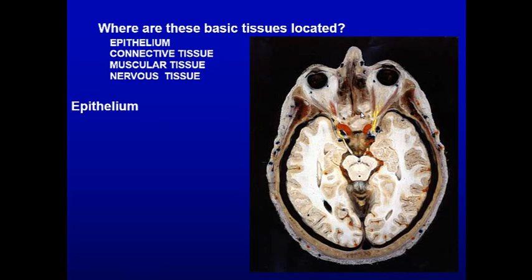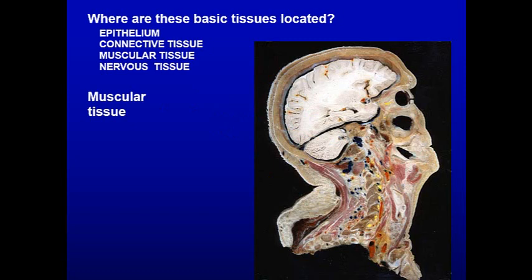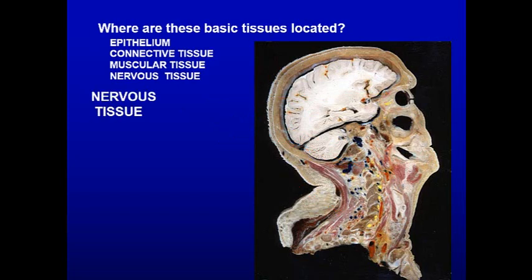Looking at the four basic types of tissue in this skull: epithelium is in the eye, lines your nose, is in your skin, and lines cavities — that's what epithelium does. It forms junctions between adjacent cells, allowing cells to hold hands and form a cavity. Connective tissue is in the skull, supports the nose, forms bone, and fat is connective tissue. Muscle is in the neck, jaw, and eye. Nervous tissue is in the brain, eye, skin, and spinal cord.